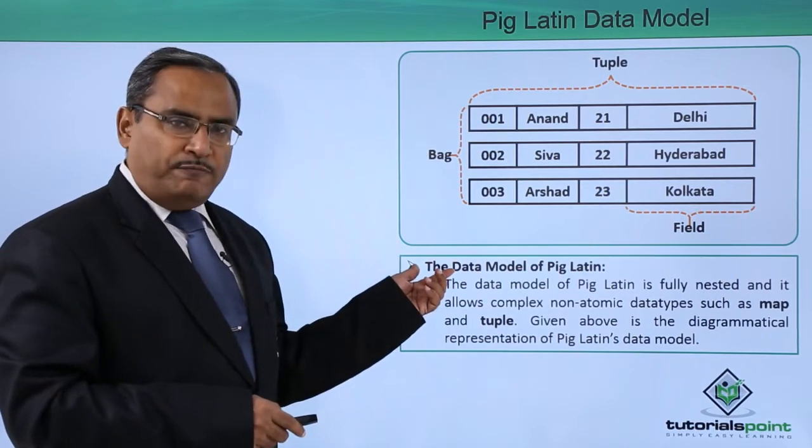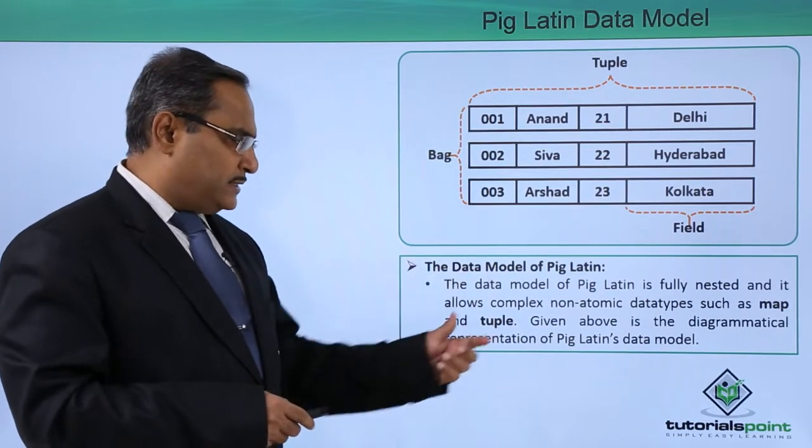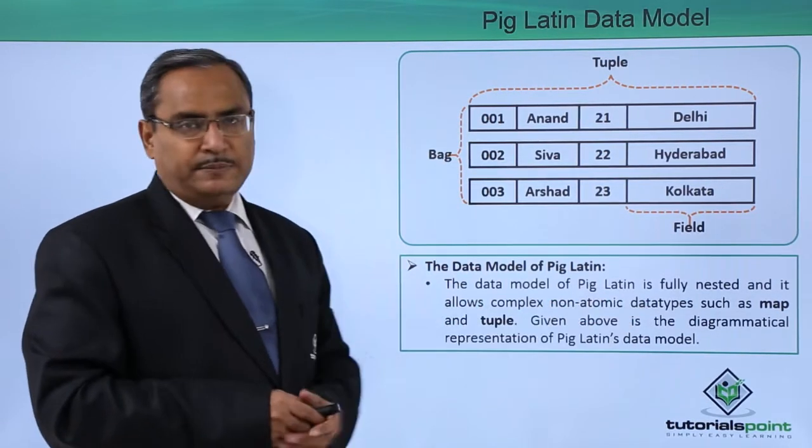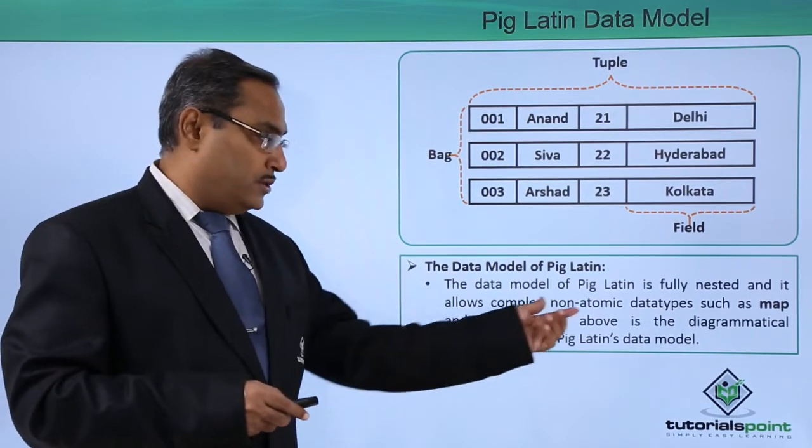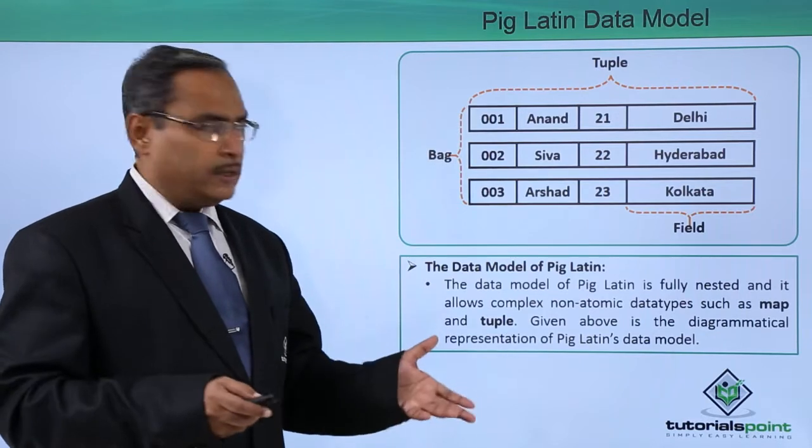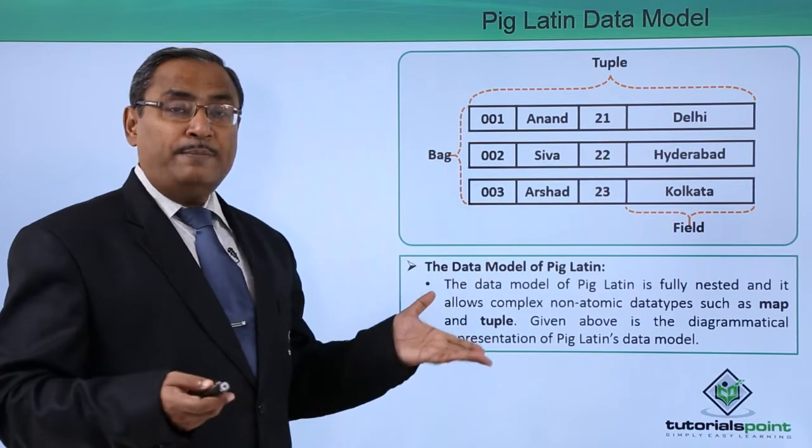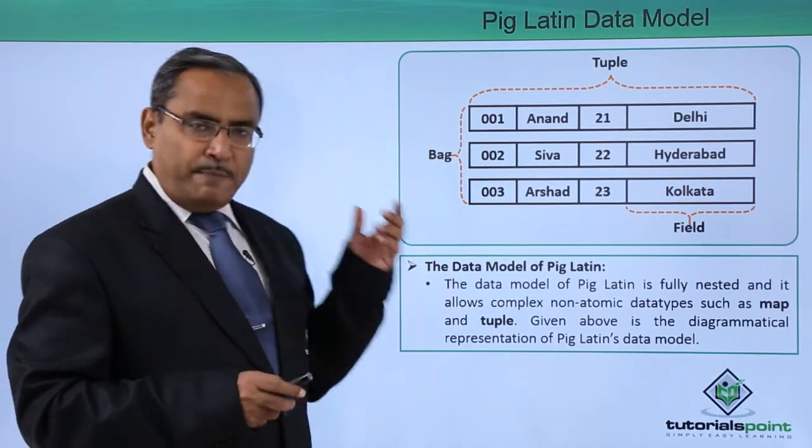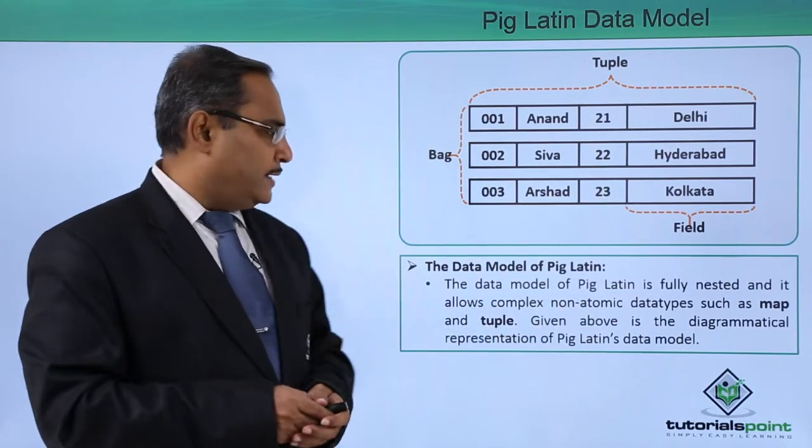The data model of Pig Latin is fully nested and it allows complex non-atomic data types such as map and tuple. This Pig Latin data model supports complex non-atomic data types. What are they? They can be a map and a tuple. You can find that this is a tuple and then what is the map? Map means collection of key value pairs.